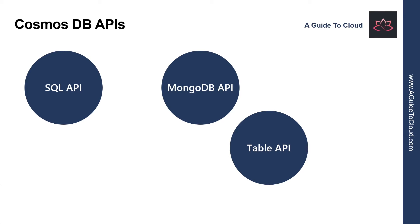So what is a MongoDB API? MongoDB is another well-known document database with its own programmatic interface. Many organizations use it on-premises. You can use the MongoDB API for Cosmos DB to enable a MongoDB application to run unchanged against a Cosmos DB database, and you can migrate the data in the MongoDB database to Cosmos DB running in the cloud as well, but continue to run your existing application to access this data.